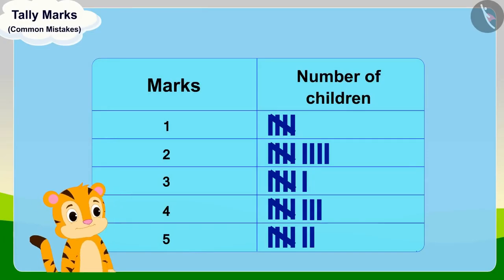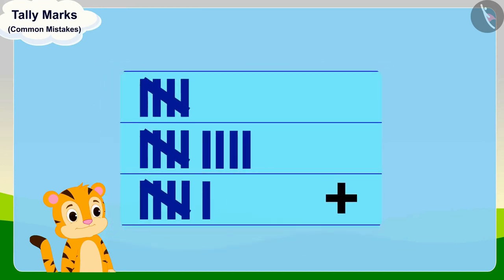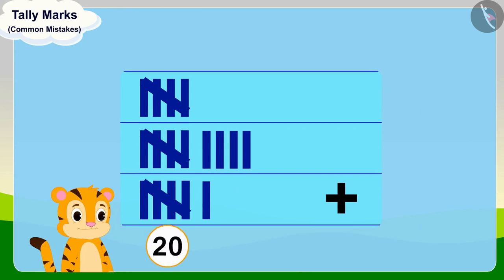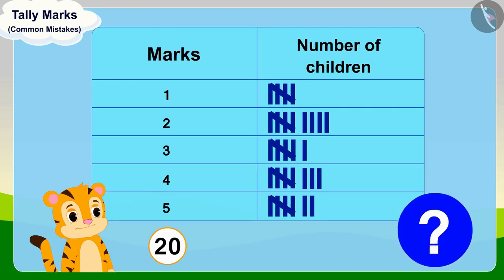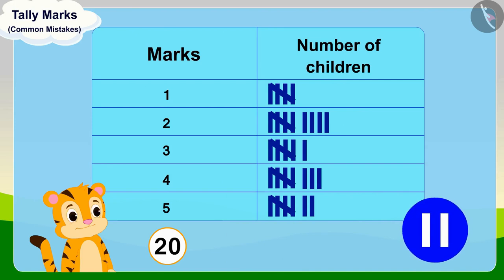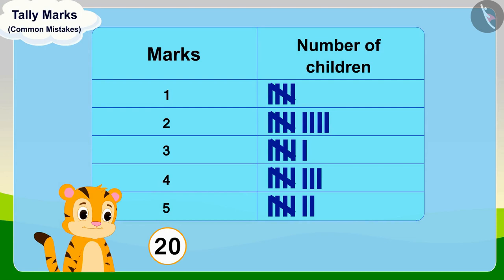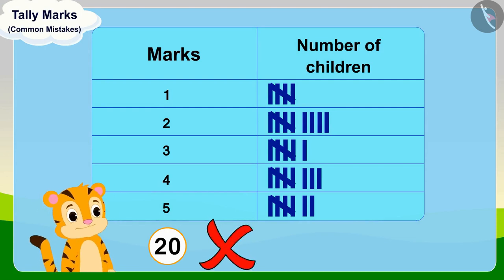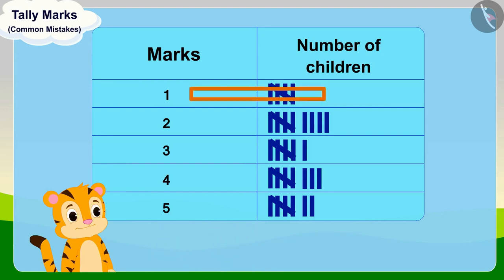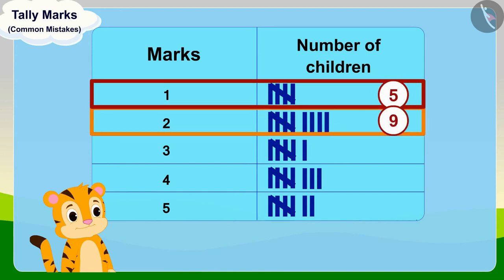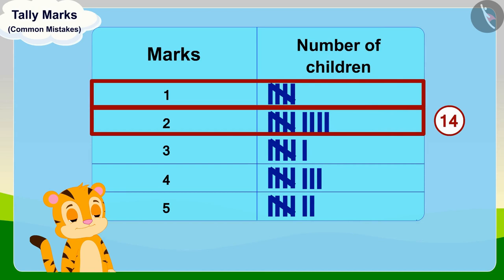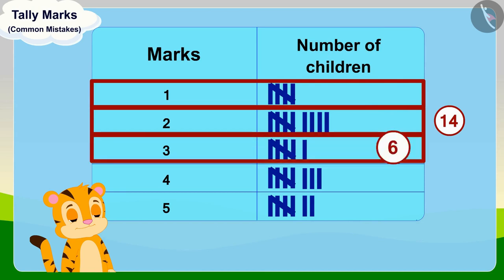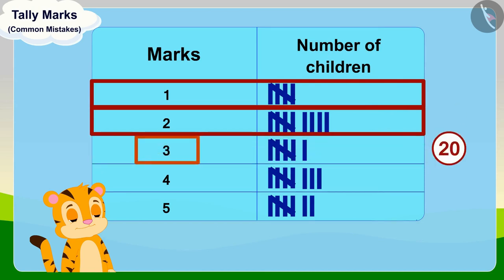Sher Khan added the number of tally marks and quickly replied that 20 children got less than three marks. Children, is Sher Khan's answer correct? You can stop the video and find the answer. That's right — Sher Khan's answer is wrong. While adding the number of children getting less than three marks, Sher Khan also included the tally marks of children who got exactly three marks.